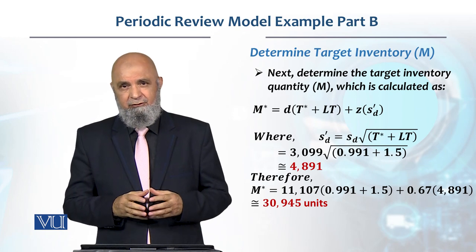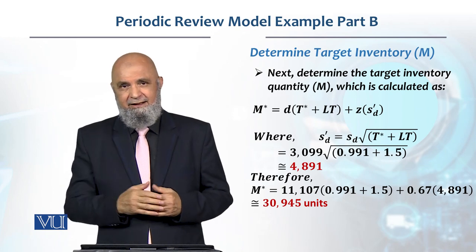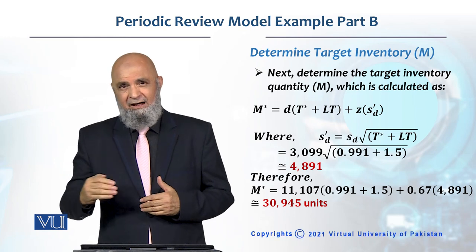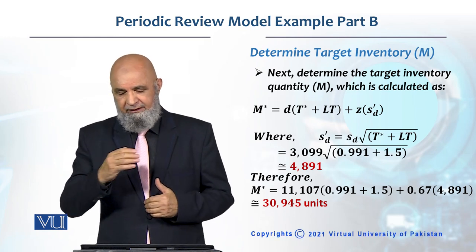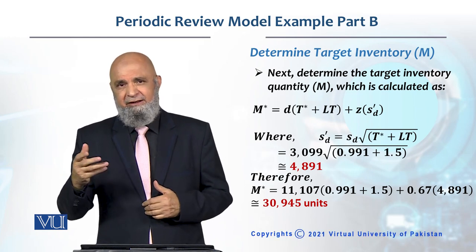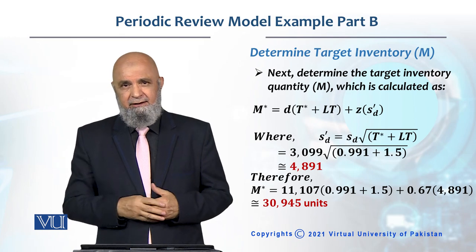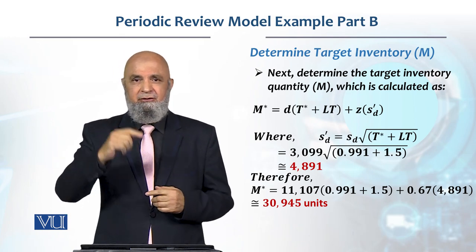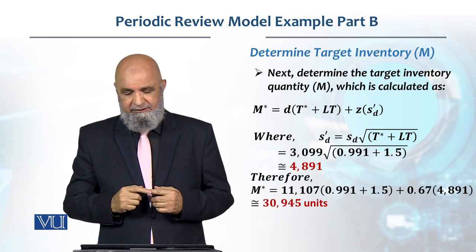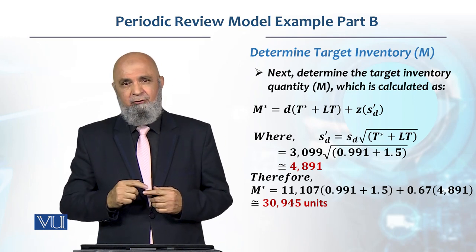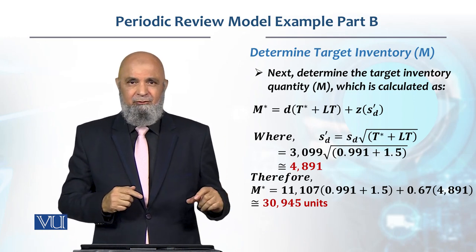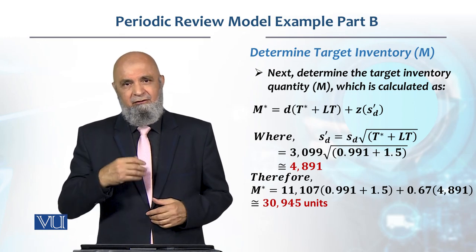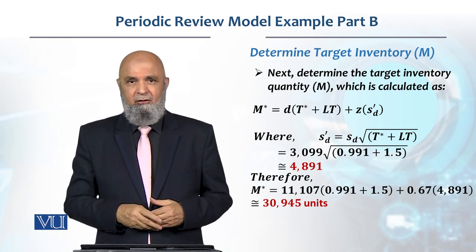That is our target. After one period — which is 0.991 months — we will check what level the inventory has reached. The difference between 30,945 and the on-hand inventory at that point will be the quantity we order. That will be our order quantity.